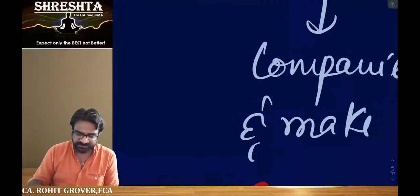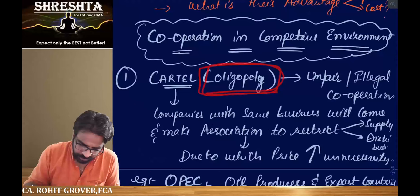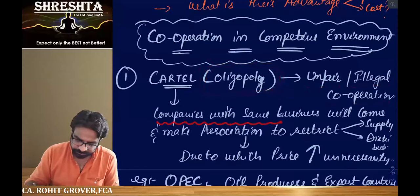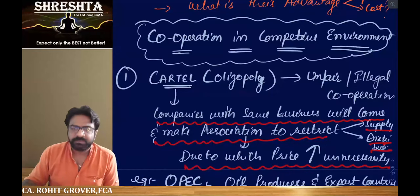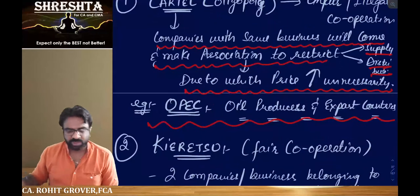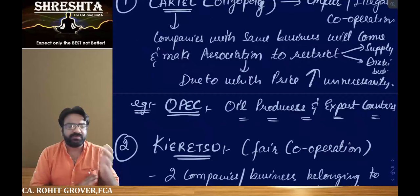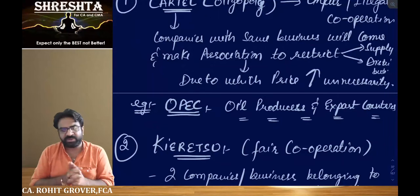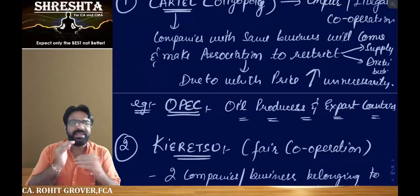Of the three cooperation models, we covered Cartel today, which is also known as oligopoly — an unfair and illegal cooperation where companies with the same business restrict supply to raise prices unnecessarily. Keiretsu and Conglomerate will be covered tomorrow. The class notes — approximately 157 pages of handwritten notes — will be shared in the group by this evening for all to download.